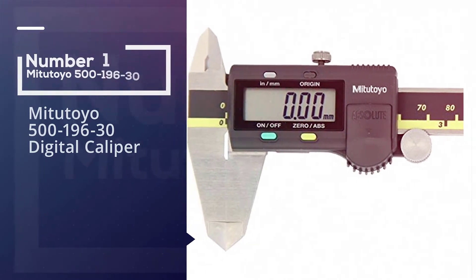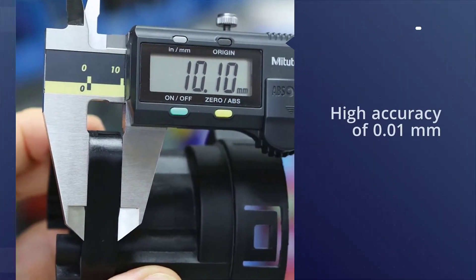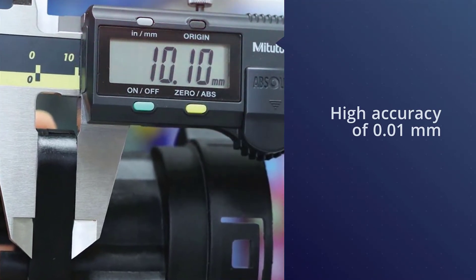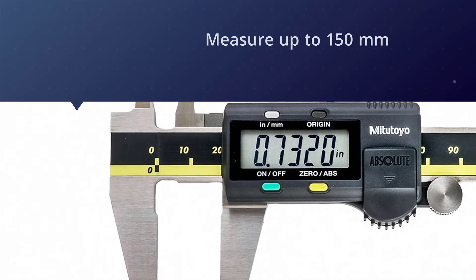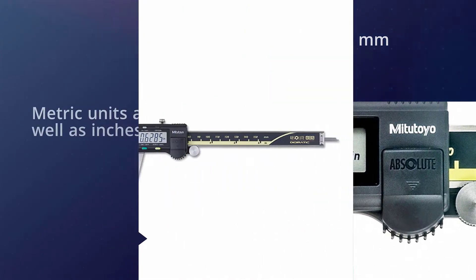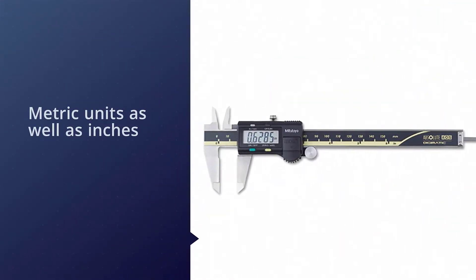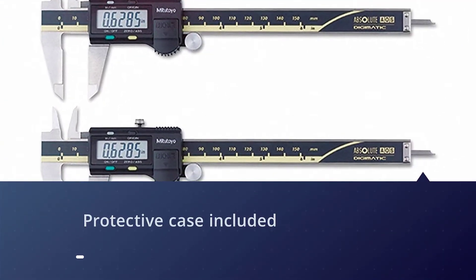Number one, most popular: Mitutoyo 500-19630 digital caliper. At the first position, we're putting Mitutoyo 500-19630 advanced onsite sensor absolute scale digital caliper as a premium option for long-term usage. It has a very high accuracy of 0.01mm. You can measure up to 150 millimeters with this caliper, which is pretty much standard for digital calipers.